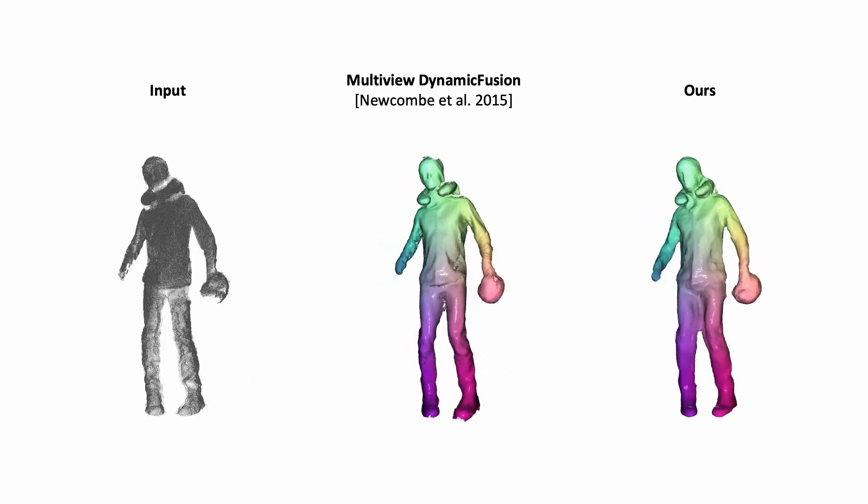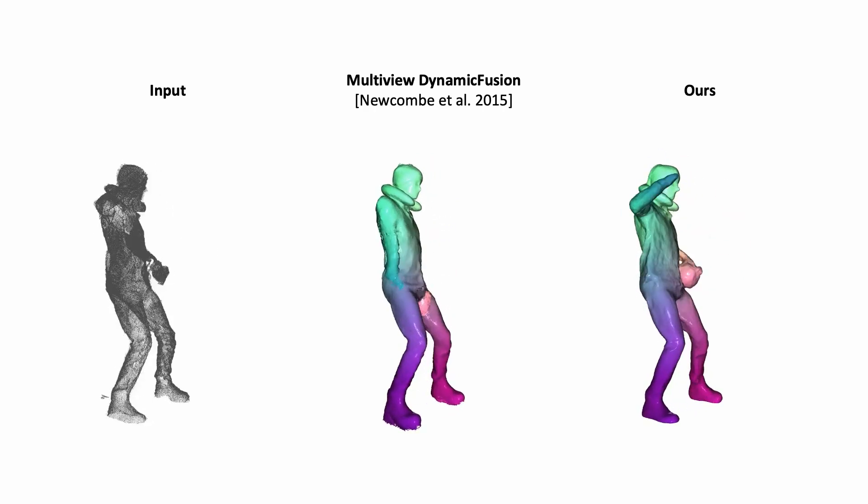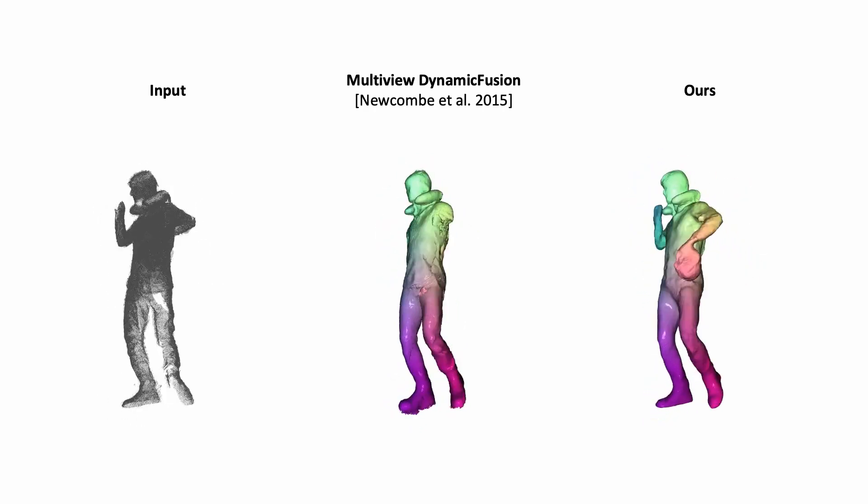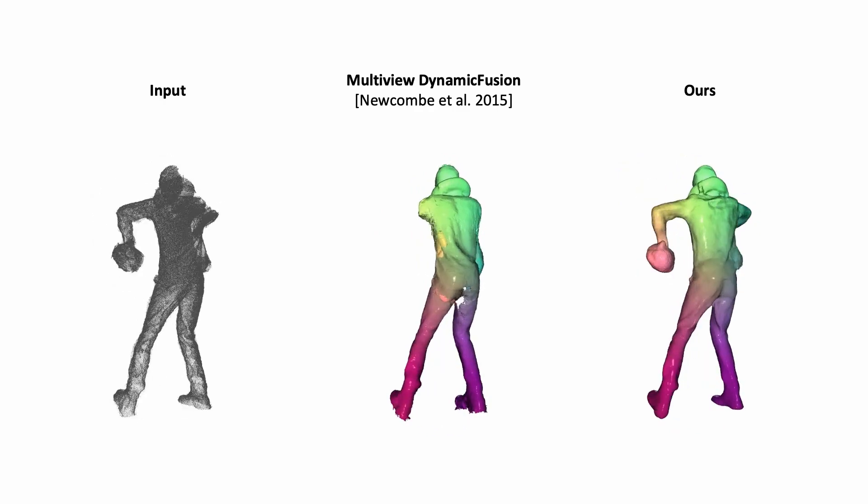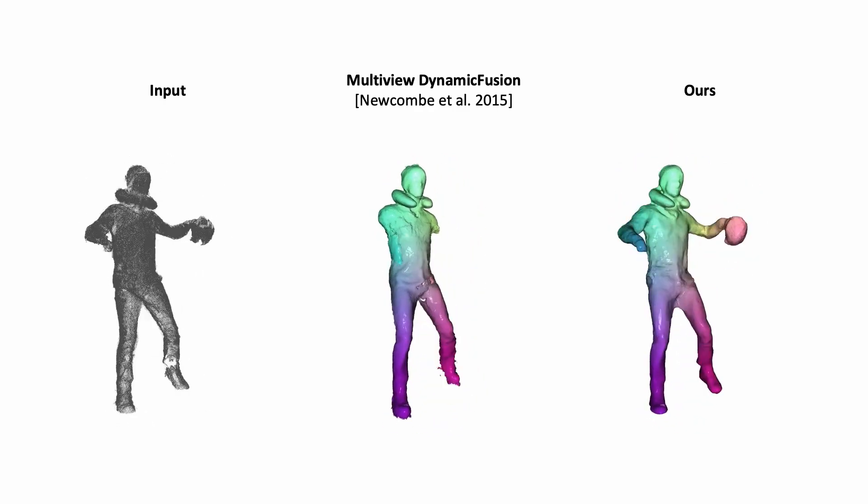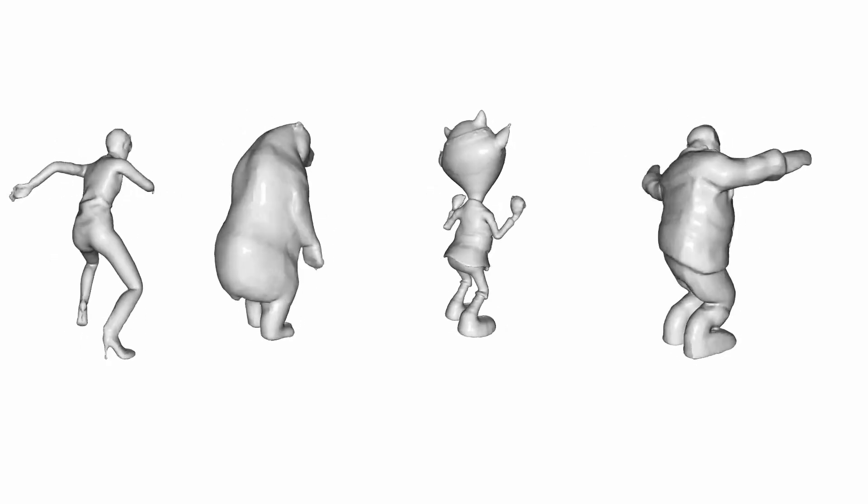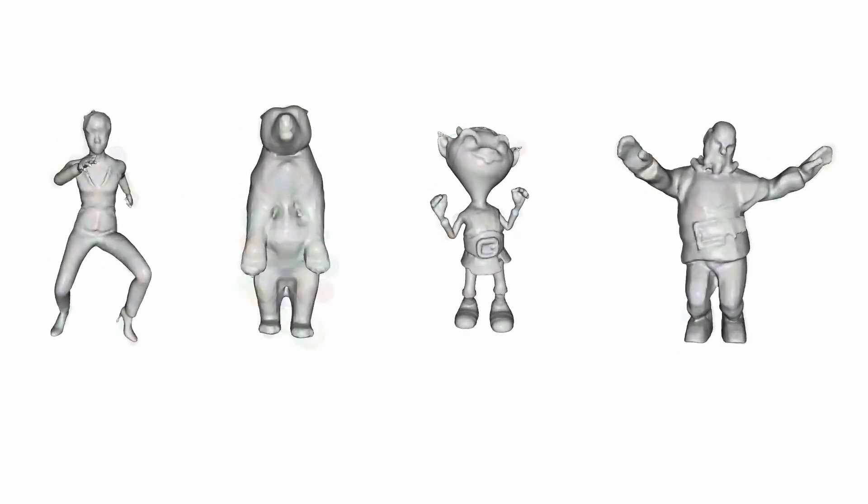Our method uses the information of all frames to reconstruct a surface, including all details, like the wrinkles of the moving clothing. We additionally conducted a series of experiments on synthetic data to compare to other learned state-of-the-art reconstruction methods, as well as to ground truth.